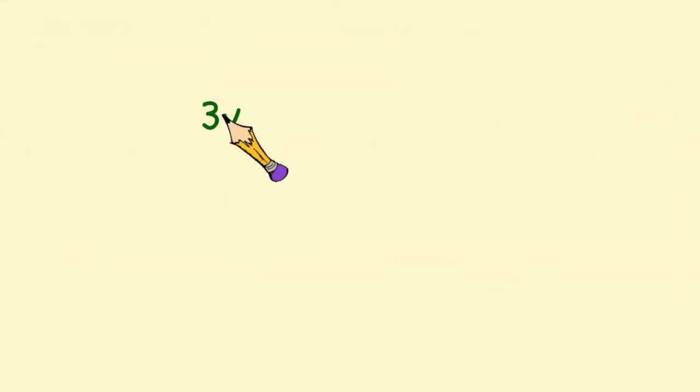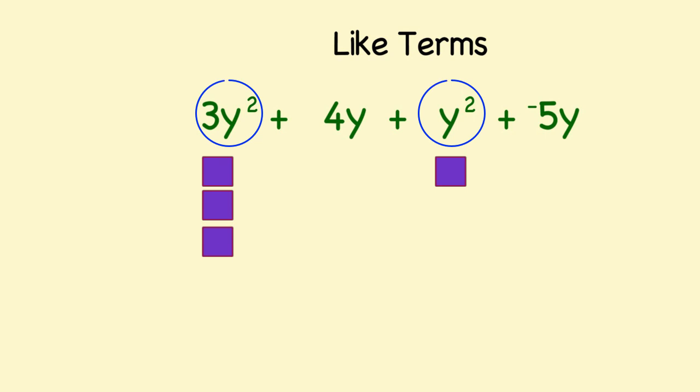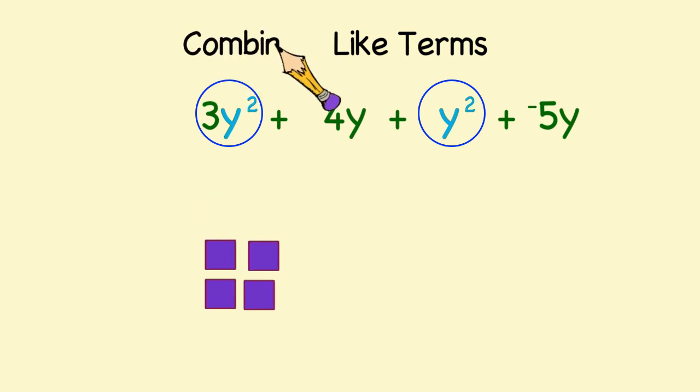So, let's say I had the problem 3y squared plus 4y plus y squared plus negative 5y. So, what are the like terms? Well, 3y squared and y squared are like terms since the variable y is raised to the second power. And when we combine those, we get 4y squared.